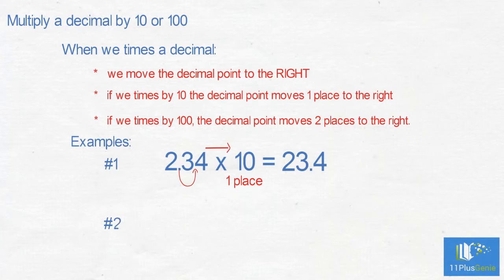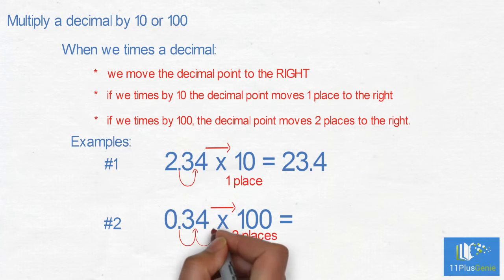Example 2: 0.34 times 100. Times moves the decimal point to the right. 100 moves it two places. 0.34 times 100 equals 34.